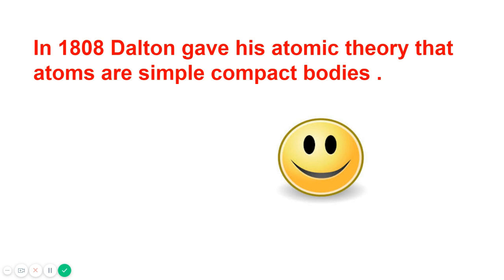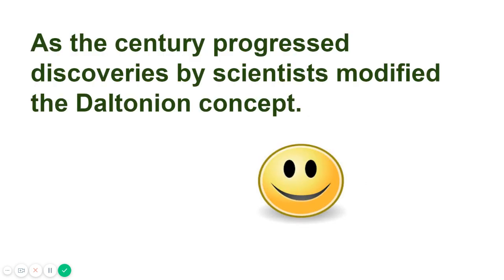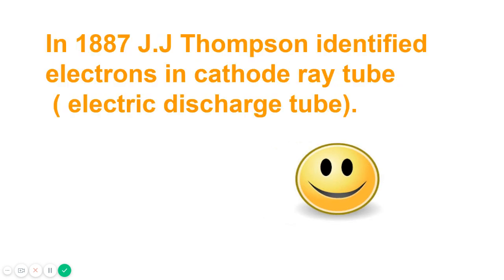He didn't know that it consists of some discrete particles as well. As science progressed, discoveries by scientists modified the Daltonian concept. In 1887, JJ Thompson came and he identified electrons in cathode ray tube, which is an electric discharge tube.